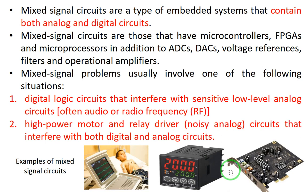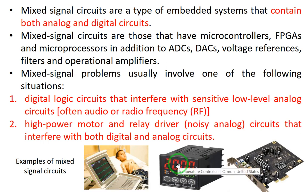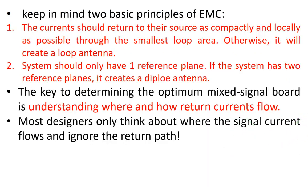Here are some examples of mixed signal circuits: an ECG or electrocardiograph, a temperature controller, and a sound card from a PC — these are very good examples of mixed signal circuits. Always keep in mind two basic principles of EMC: first, the current should return to the source as compactly and locally as possible, forming the smallest loop area, because otherwise it will create a loop antenna.